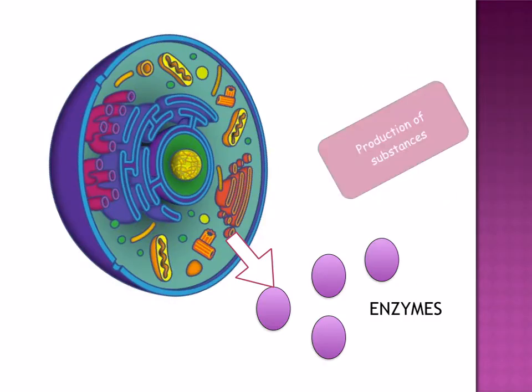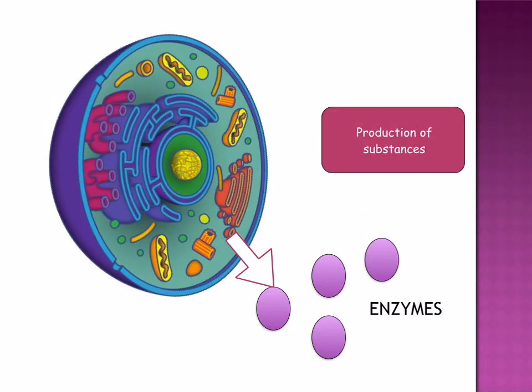Energy is required in the production of substances, for example enzymes and hormones. ATP is needed to form the vesicles that are necessary for these cell products.